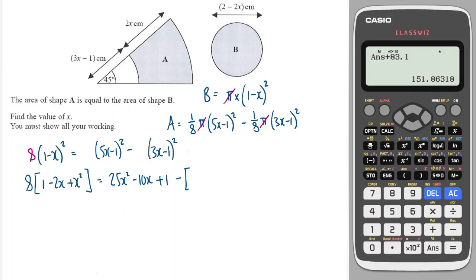And then I'm going to take away, I'm going to put the second one in brackets. 3x times 3x is 9x squared. And 3x times a minus 1 is a minus 3x. And then minus 1 times a 3x is another minus 3x. And then minus 1 times minus 1 is plus 1.